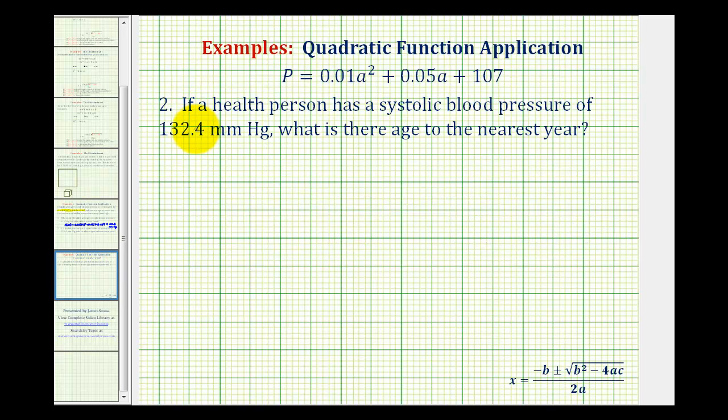For this problem, they're giving us the pressure P and we need to solve for A. So we need to solve the equation: 132.4 equals 0.01A squared plus 0.05A plus 107. So we have a quadratic equation. So what we're going to do here is set it equal to 0 and use the quadratic formula.